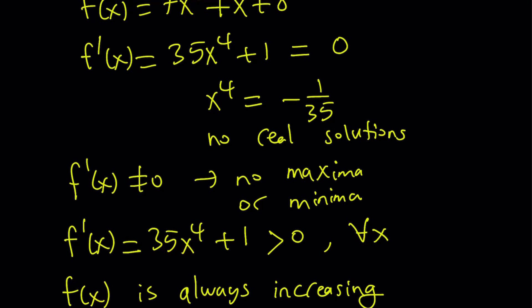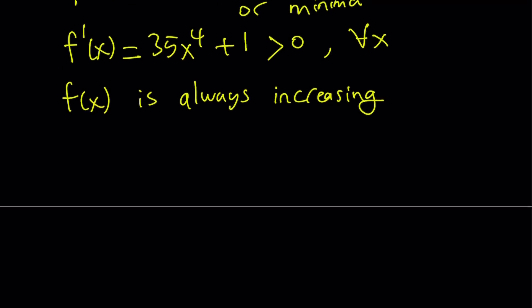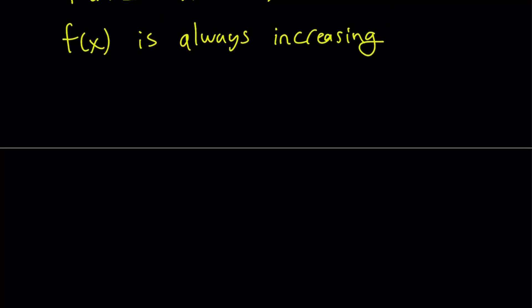But anyways, our function is always increasing, which means it will intersect the x-axis only once. That means there's only going to be one real solution.